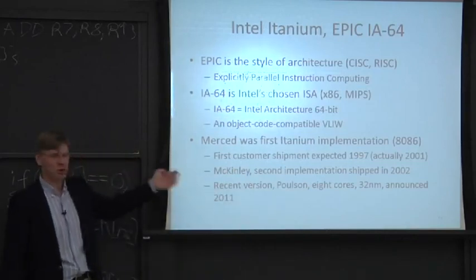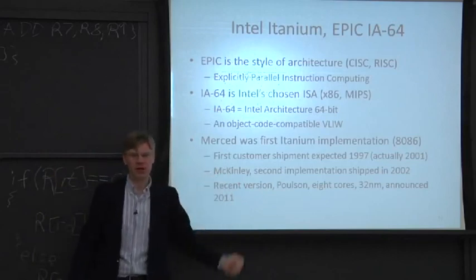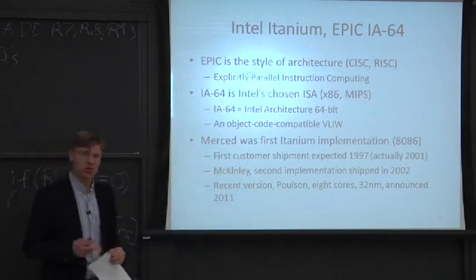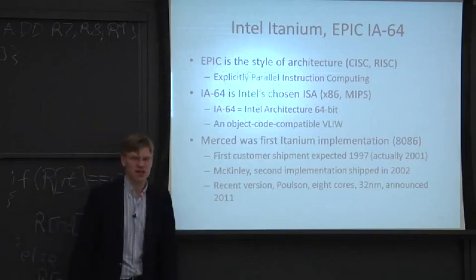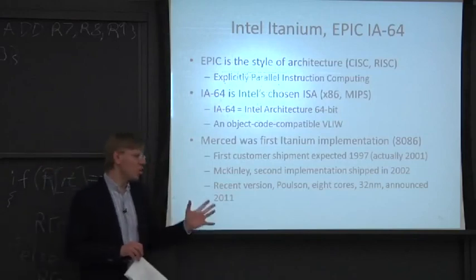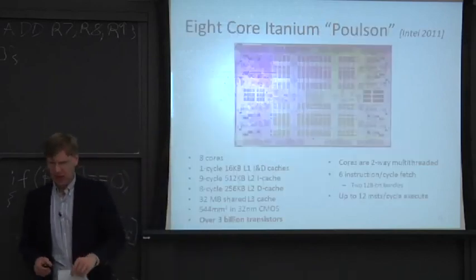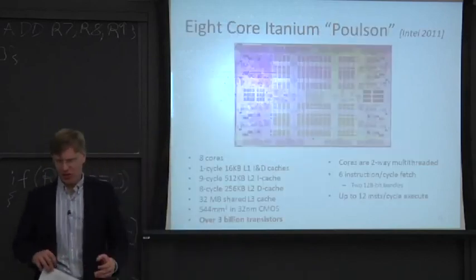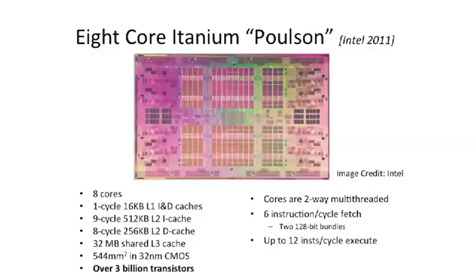McKinley was the second implementation, shipping pretty quickly after Merced and was a much better implementation, though still hard to build. In 2011 at ISSCC, Intel introduced the Poulsen processor — a big machine with eight cores in 32 nanometer, 32 megabytes of shared L3 cache, and 544 square millimeters die area.